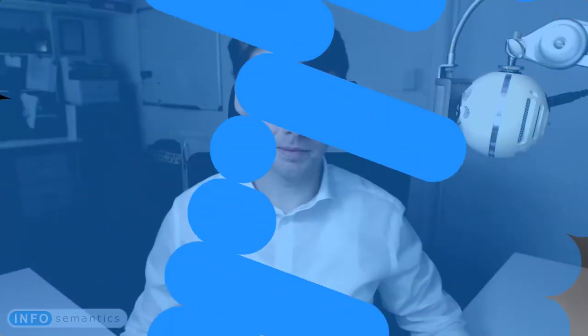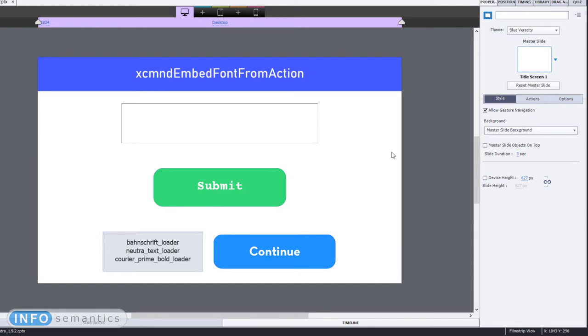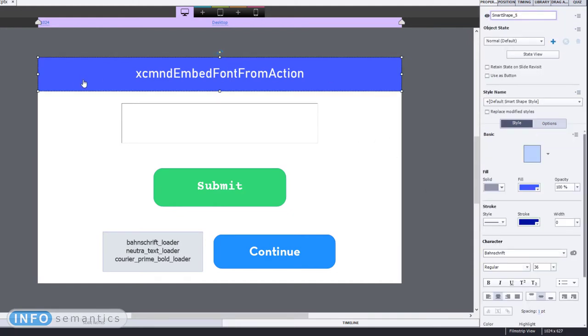As the name suggests, XCMND Embed Font From Action allows you to embed a font into Adobe Captivate, and this is a long-standing feature request for CP Extra. Before we explain how this feature works, let's explain why you need it. In my course design, I have several different custom fonts: the title uses the Barnscript font, one button uses Courier Prime, and another uses Nutra Text. While this all renders correctly on my computer, a screenshot of what it looks like on my tablet shows that none of those fonts are actually rendering correctly — it's defaulting to a WebSafe font available on all devices.